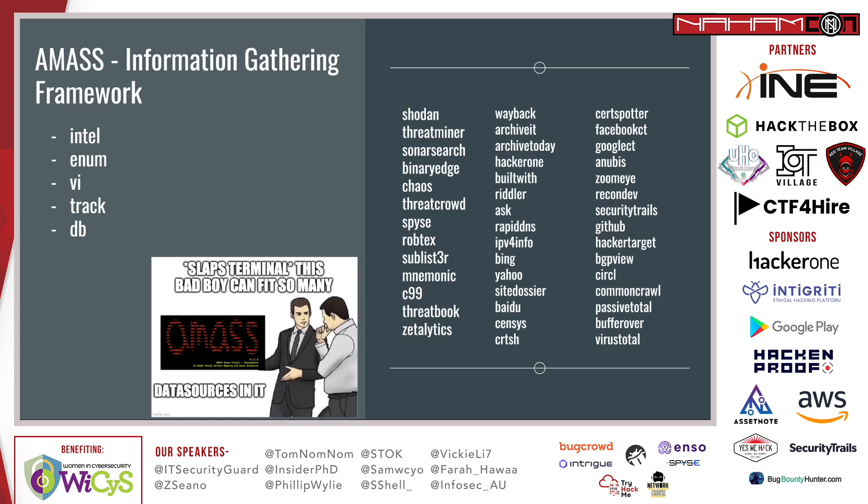As you can see on the right, those are the data sources supported by AMOS by default — 42 of them in total. But not only that, it is also capable of doing brute force, several permutations, certificate grabbing, and more.